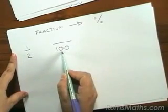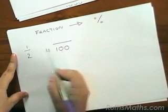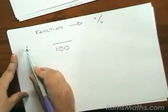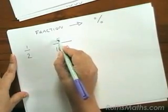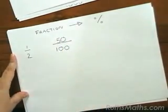The 2 has to be multiplied by 50 to get 100. So we have to do the same to the top. 1 times 50 gives us 50.